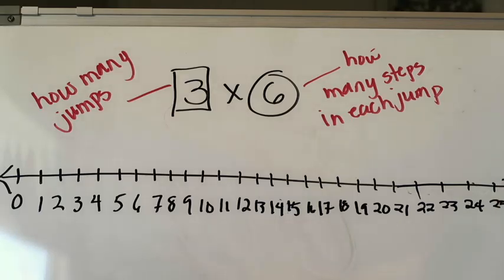Today the strategy we're going to focus on is continuing to understand what each factor represents, and then learning how to multiply using a number line — how to skip count on a number line when multiplying two factors. I'm going to give you guys some examples and then come back at the very end to close the video up.